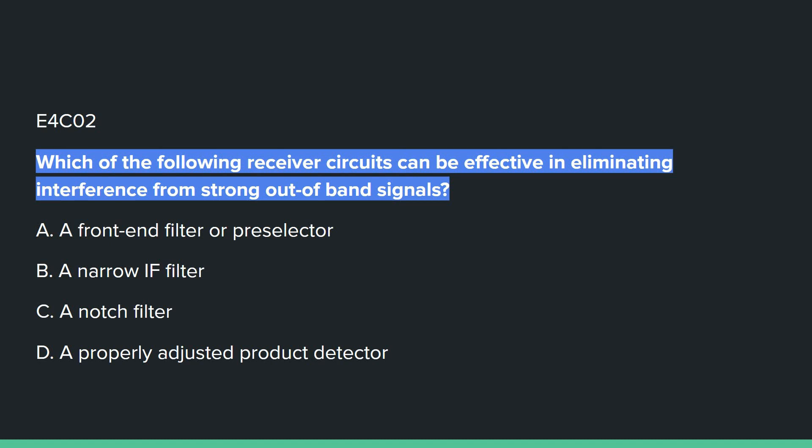E4C02: Which of the following receiver circuits can be effective in eliminating interference from strong out-of-band signals? Answer A: the front-end filter or pre-selector.